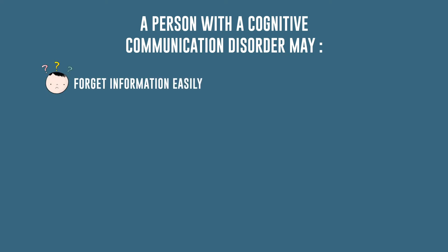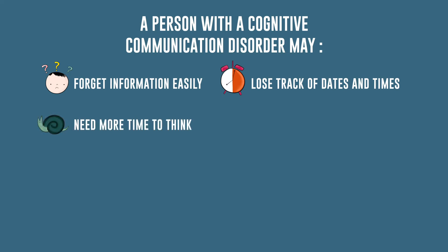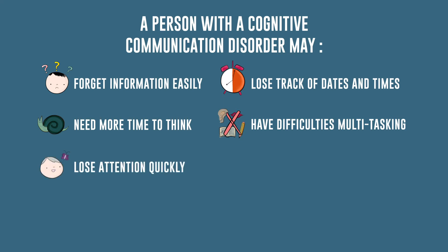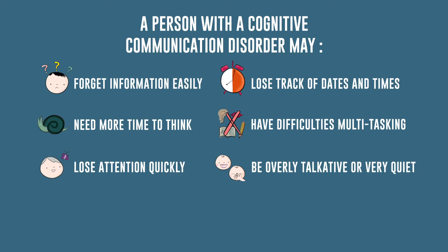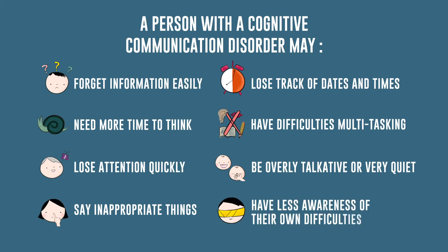A person with a cognitive communication disorder may forget information easily, lose track of dates and times, need more time to think, have difficulties multitasking, lose attention quickly, be overly talkative or very quiet, say inappropriate things, and have less awareness of their own difficulties.